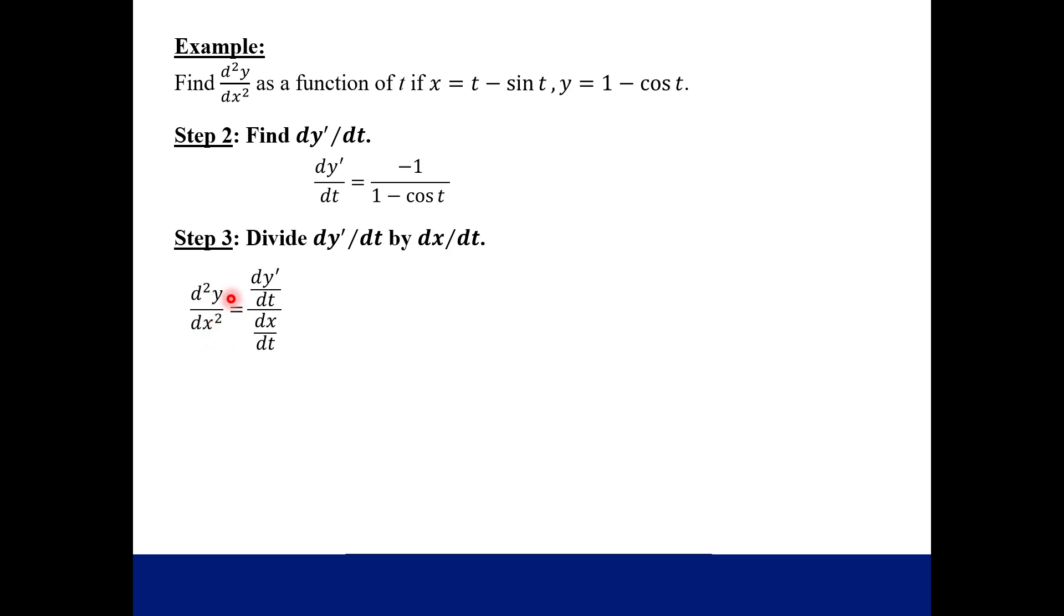So here's our formula for our second derivative of y with respect to x. And then we just fill in what we know. We just did a lot of work to figure out this numerator, and the denominator is just our x function, but the derivative of it. So let's differentiate, and that denominator becomes one minus cosine t.